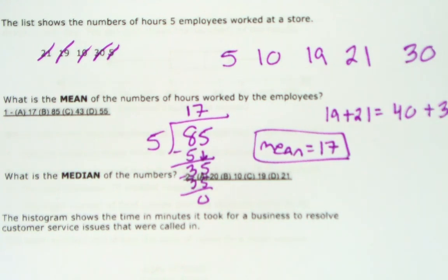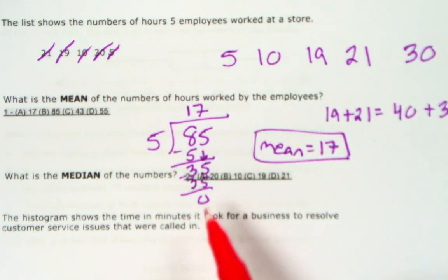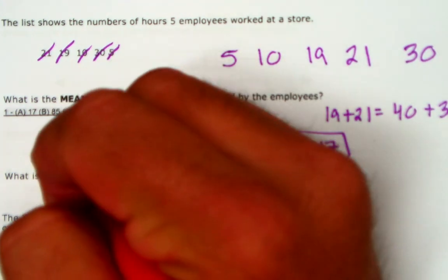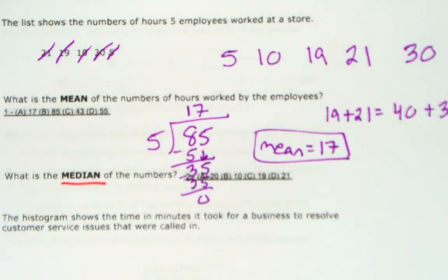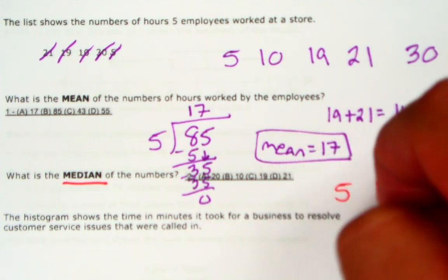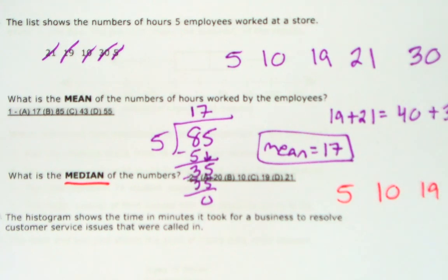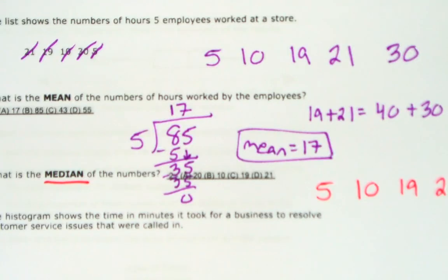All right y'all, we're at the same question where the employee worked five hours, but this time it's asking for the median. The median is the middle number. Start by putting the numbers in order from least to greatest, which we already did on the previous problem, so I'm just rewriting it now to find the median.